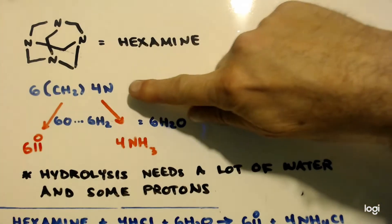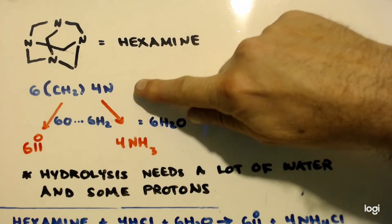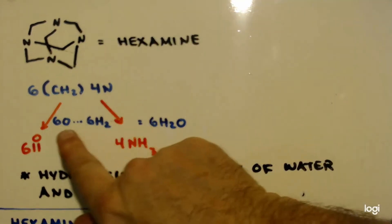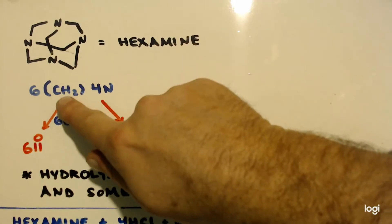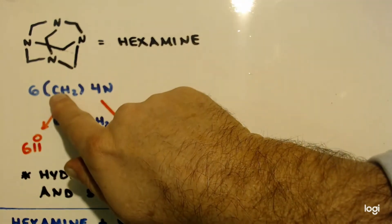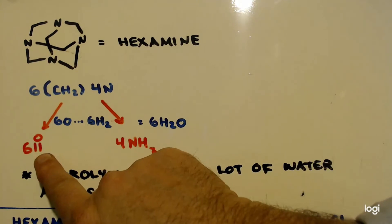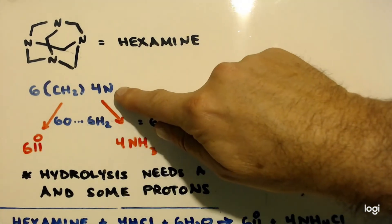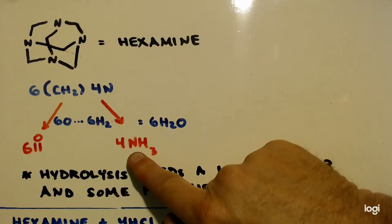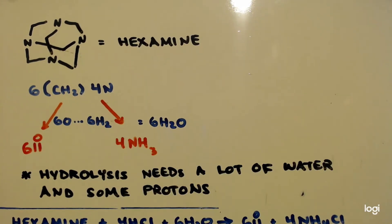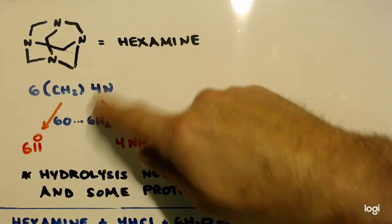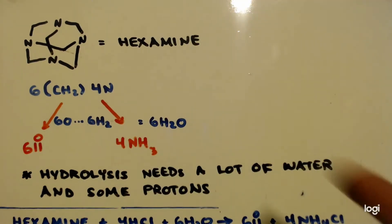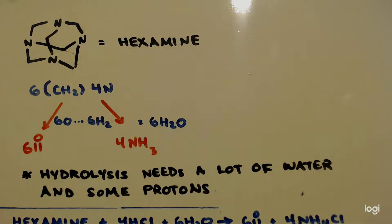I want you to look at, this is the formula for hexamine. Now if you add six waters, six O's and six H2's to this, this CH will turn into six formaldehydes. These four nitrogens will turn into four ammonias. So how do we get the hexamine to decompose like that, to break down like that? Well, hydrolysis needs a lot of water and some protons.